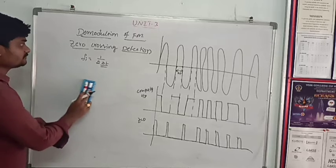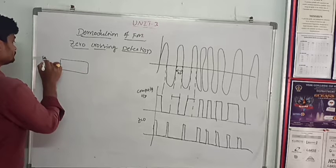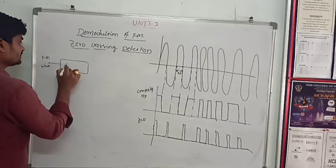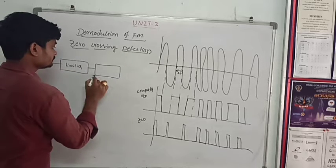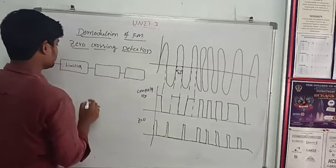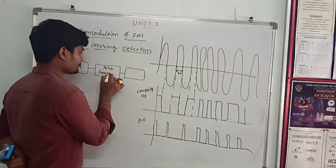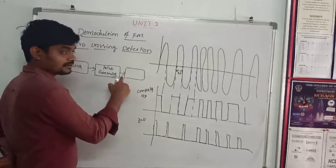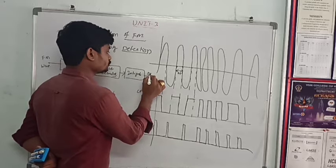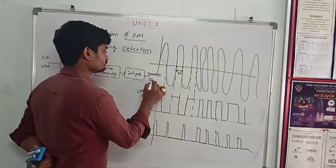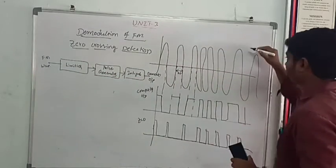The block diagram of the zero crossing detector consists of: the FM wave input going into a limiter circuit, then a pulse generator, then an integrator. The integrator output is the demodulated output.